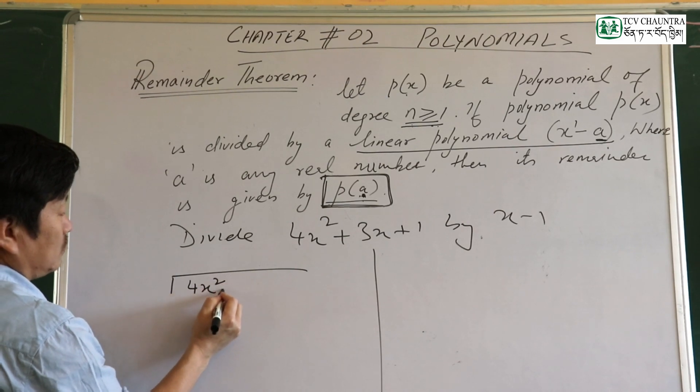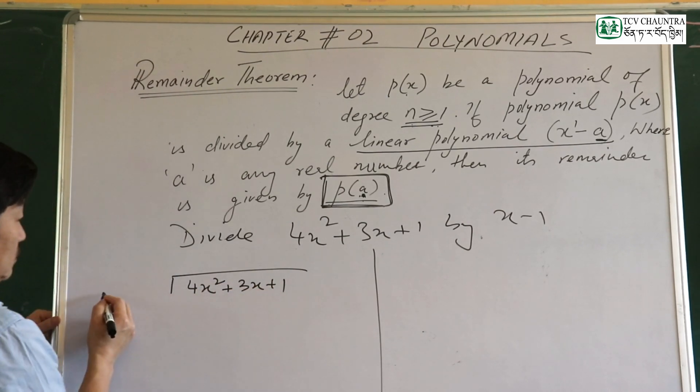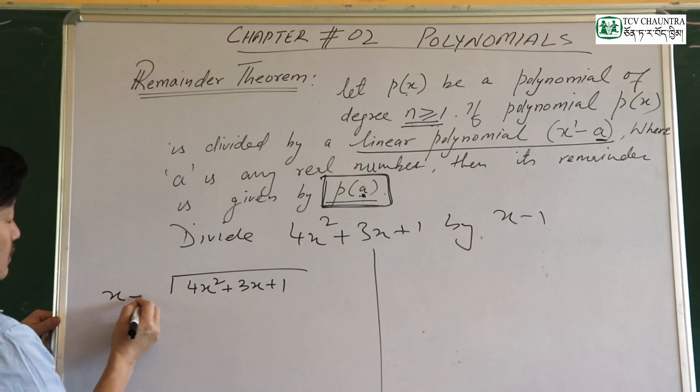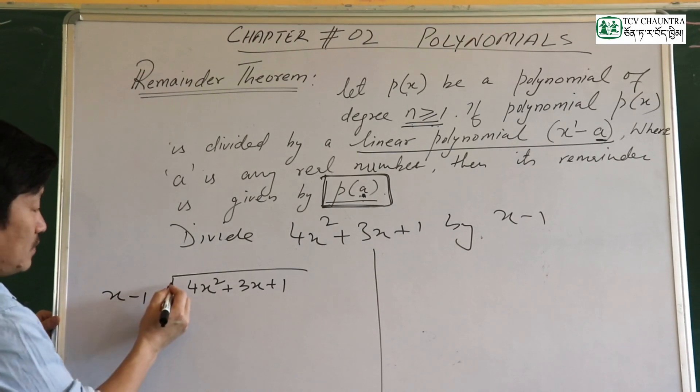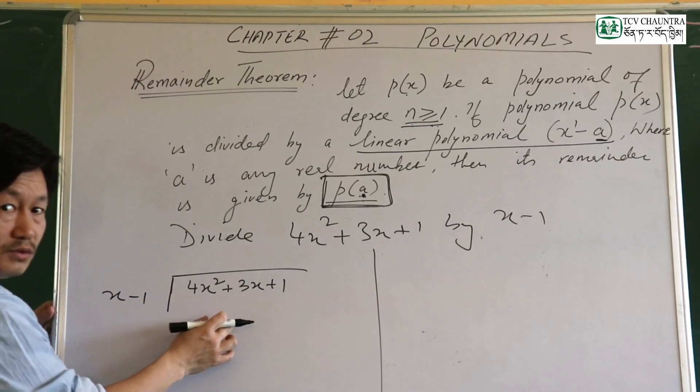The dividend is 4x squared plus 3x plus 1, and the divisor is x minus 1.